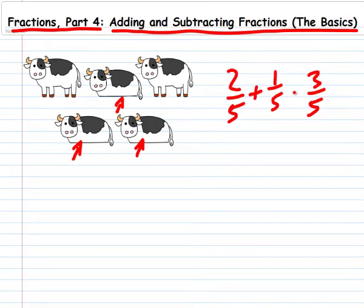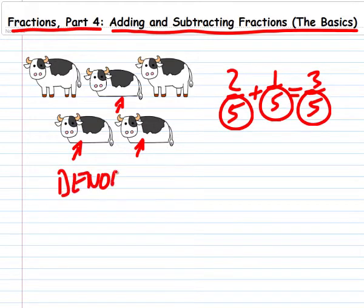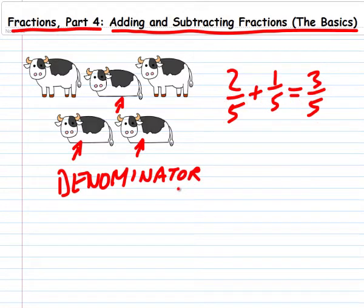Two-fifths plus one-fifth equals three-fifths. As long as the number on the bottom, that's called the denominator, is the same, you can add fractions just like anything else. Two plus one equals three, so two-fifths plus one-fifth equals three-fifths.